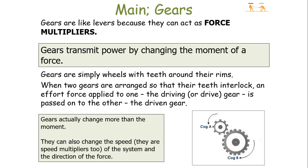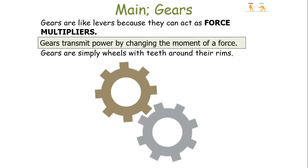Now, gears, like levers, also act as force multipliers, but they transmit the power by changing the moment of a force. Gears are simply wheels with teeth around their rims. When two gears are arranged so that their teeth interlock, an effort force is applied to one — the driving or drive gear — and is passed on to the other gear, the driven gear. Gears can actually change more than just the moment — they can change the moment, the speed, and the direction of the force.